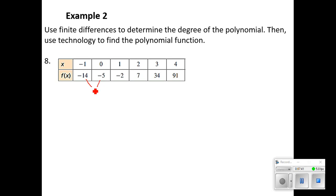14 minus -5, or -14 + 5 is what that turns into. We get -9. -5 minus -2. -2 minus 7. -9. 7 minus 34. And 34 minus 91. -57.